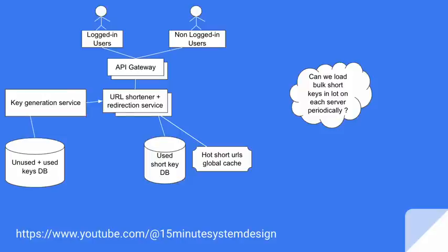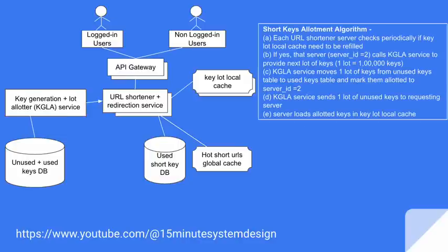Can we load bulk short keys in lots on each server periodically? Currently, the URL shortener service asks for a fresh key every time a user creates a long URL, which might create a huge load on the Key Generation Service. Can we reduce the load and make it faster for the URL shortener service without a network call every time? Yes, we can. The Key Generation Service can act as a Key Generation Lot Allotter (KGLA) service, where rather than serving an individual key every time, it provides a bunch of keys — a complete lot — to a particular server, and maintains which keys have been allotted in the DB.